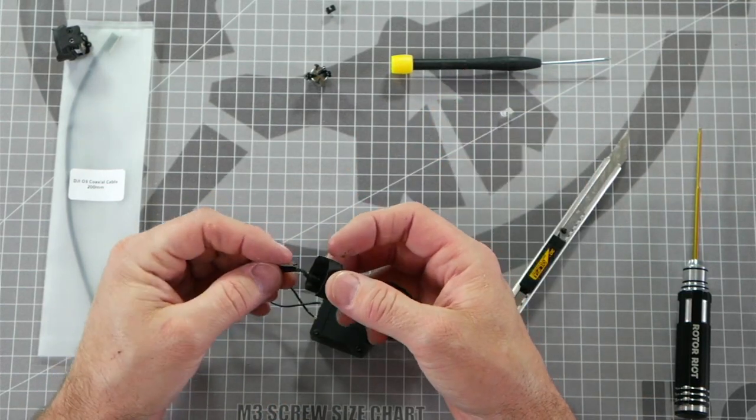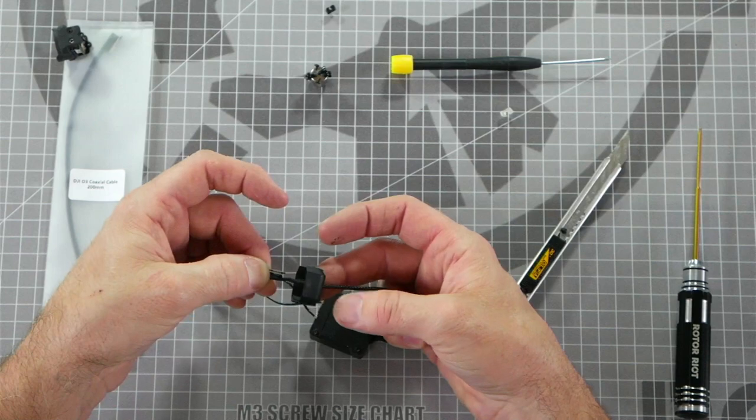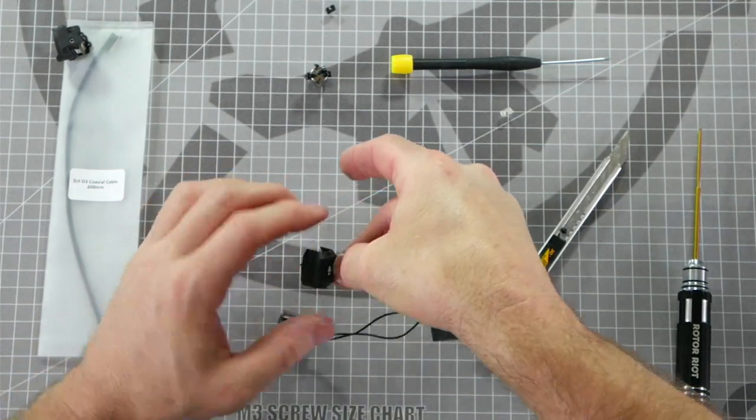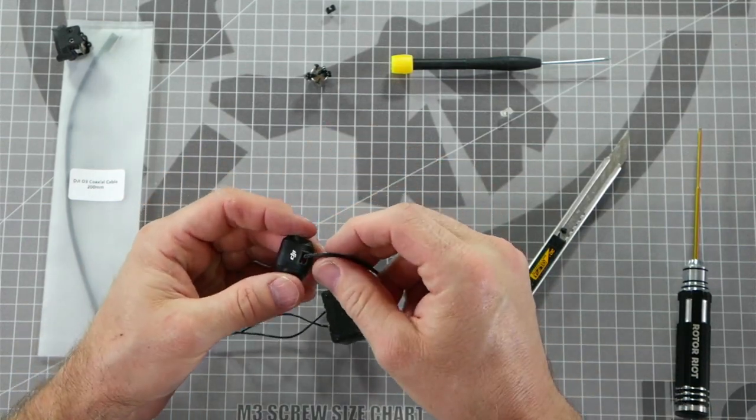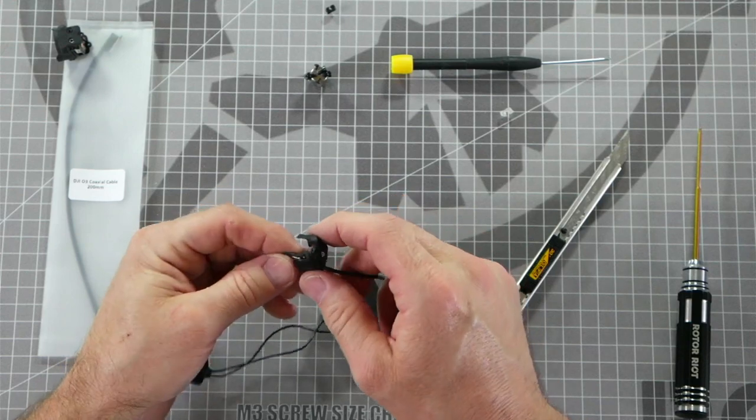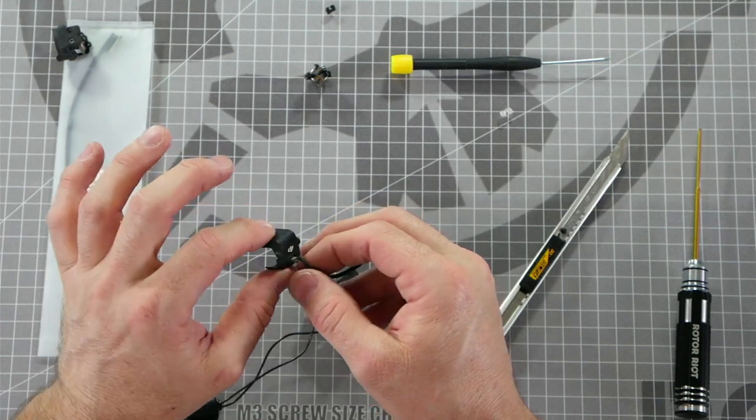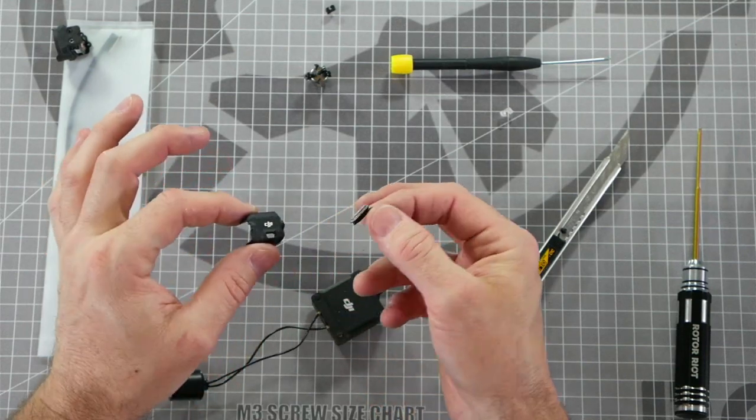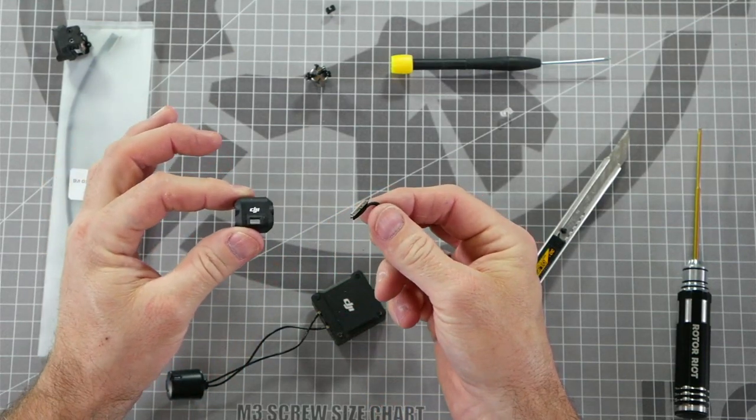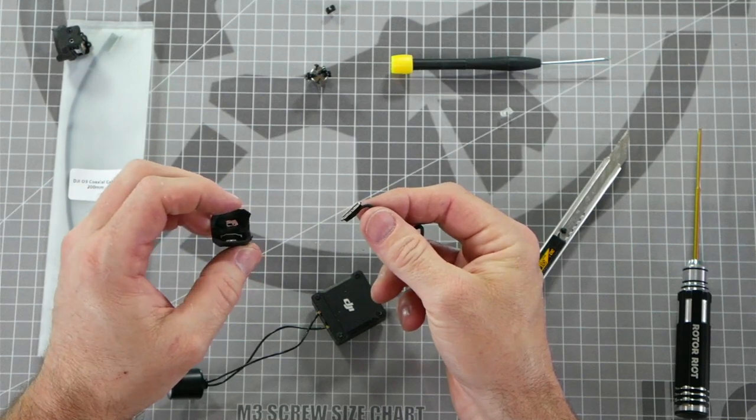Now we should be able to take the camera cable turn it sideways and pull it out through the rectangular hole at the back of the camera. Being very careful not to damage the cable. Guide it through the hole very gently ensuring that nothing gets snagged or hung up on the hole. There we go. The cable has been removed from the camera case.